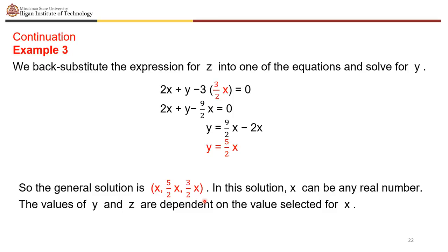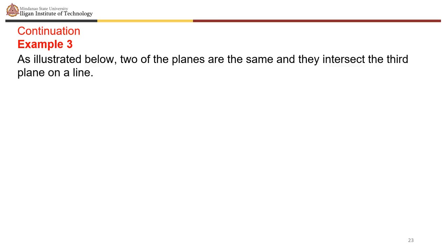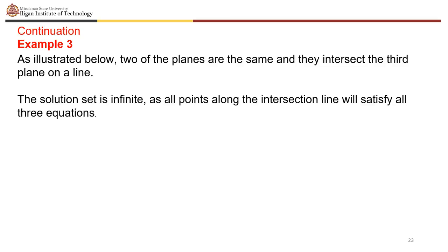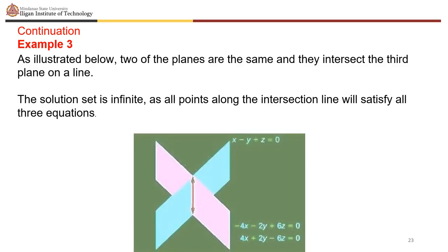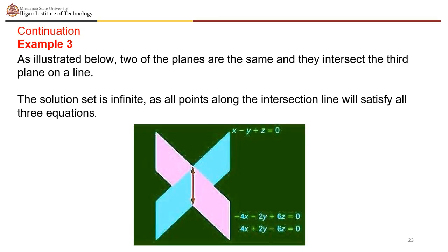As illustrated in the sketch, two of the planes are the same and they intersect the third plane on a line. The solution set is infinite, as all points along the intersection line satisfy all three equations. The sketch shows the plane represented by negative 4x minus 2y plus 6z equals 0 and 4x plus 2y minus 6z equals 0 as the same plane, and x minus y plus z equals 0 as the intersecting plane.